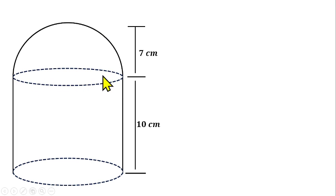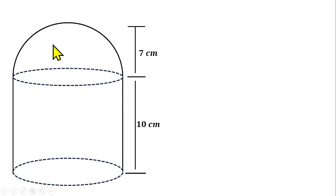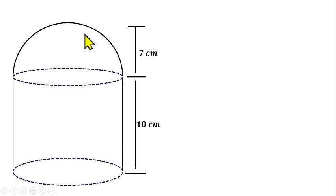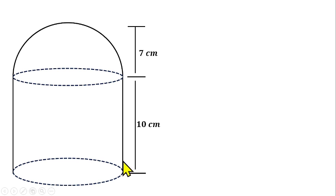The bottom of this hemisphere and the top of the cylinder will not be seen again, but we show them to help calculate the volume. For total surface area, this hidden circle is not included. To find the total surface area of this solid, we need: the curved surface area of the hemisphere, plus the curved surface area of the cylinder, plus the area of the circular base of the cylinder.